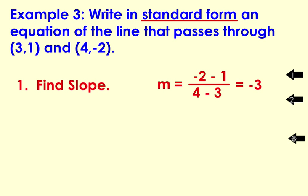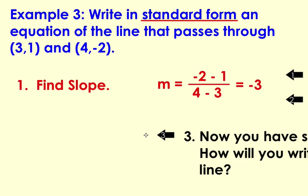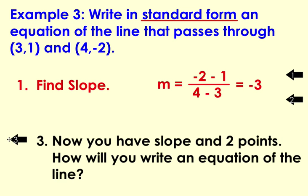After you find your slope, you should be thinking about, now that you have two points and you found your slope, how will you use all those pieces of information to write an equation of a line? Will you be using point-slope form? Will you be using slope-intercept form? Or can you directly go to standard form? Those are some questions you should be thinking.